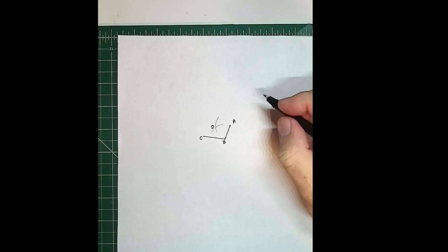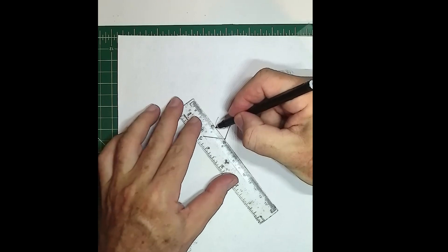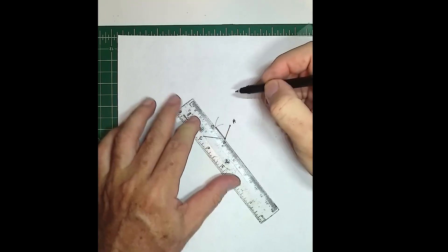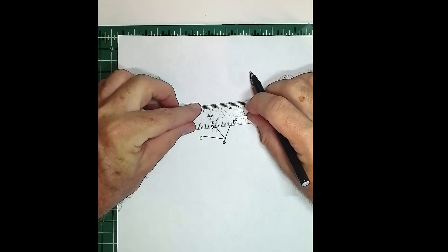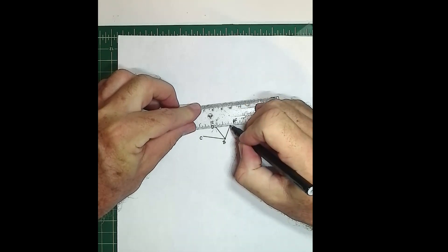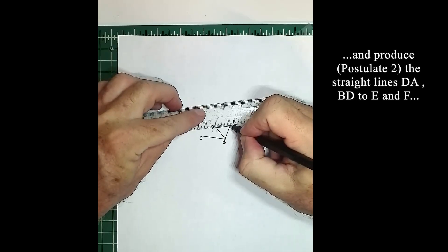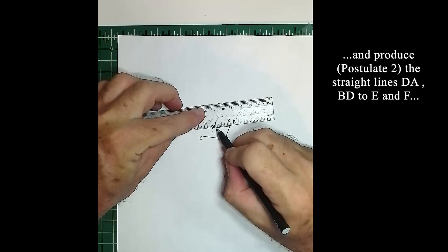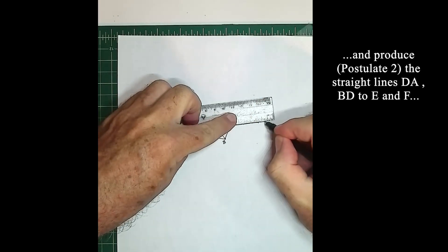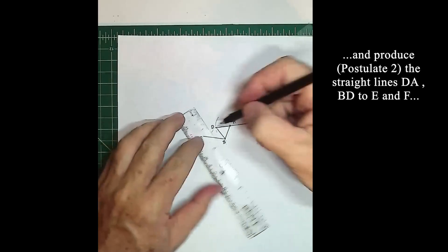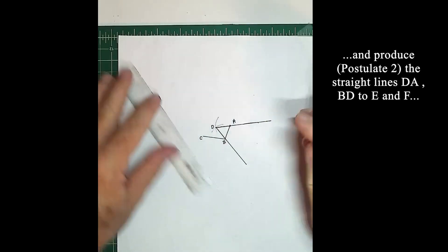We need line segment DB and line segment AD. Actually what I need to do is draw this again, and I need to extend this line out. And I also need to extend this line out. I didn't read that completely.